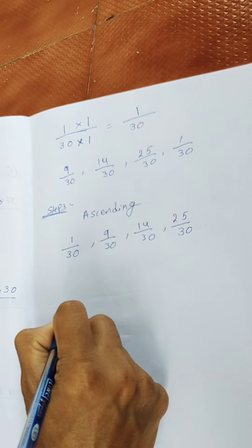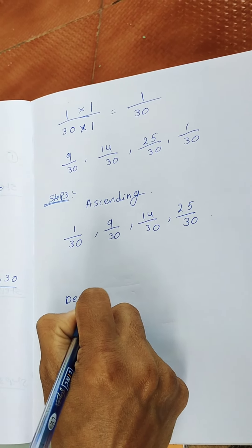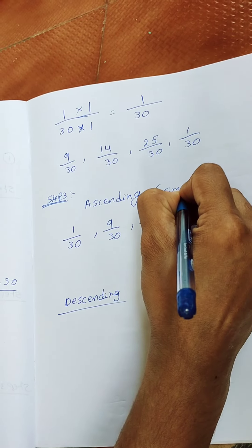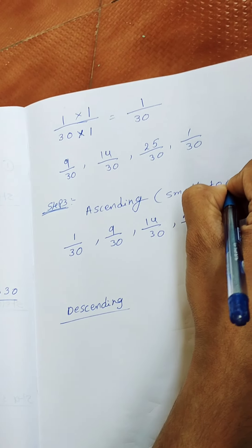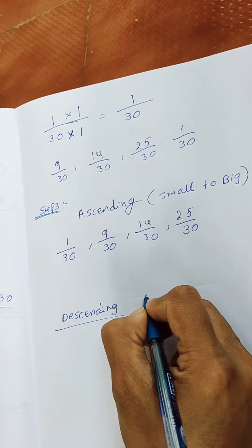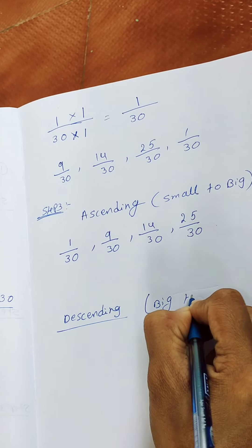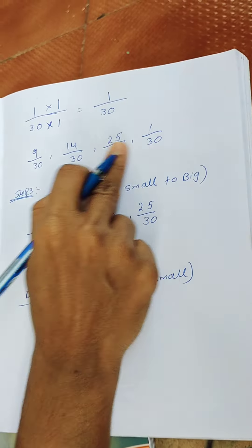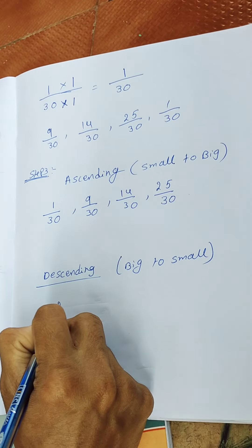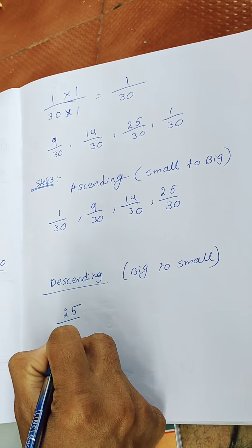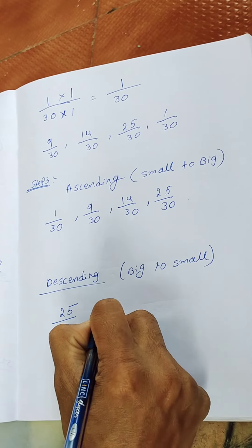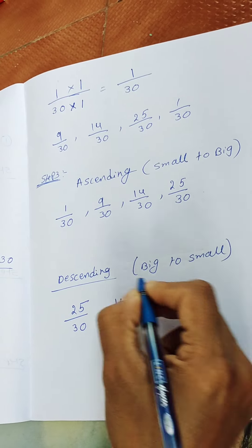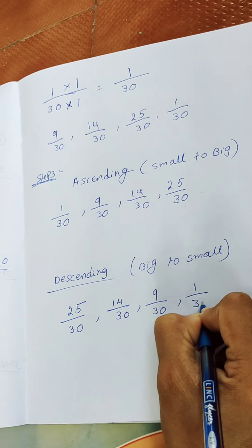Now for descending order — descending order means big to small. So we write from big to small: first 25 by 30, next 14 by 30, next 9 by 30, and last 1 by 30.